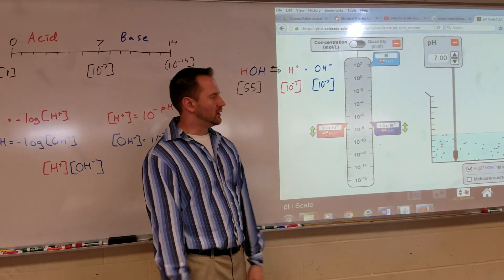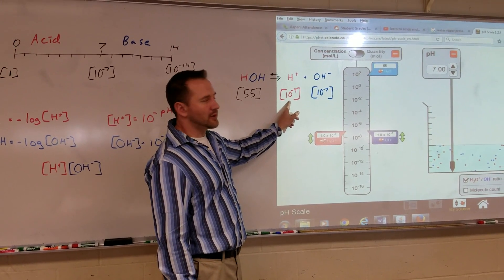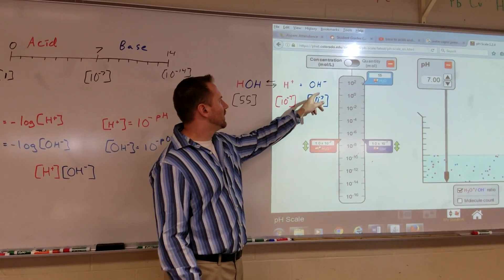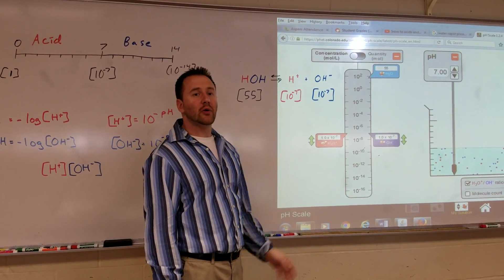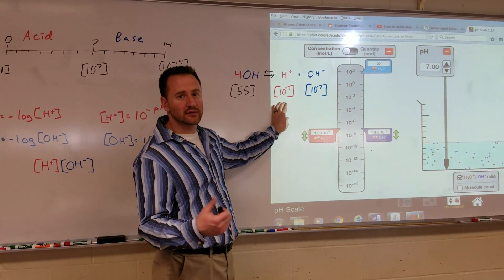However, every once in a while, a certain proportion of it will break apart and form the hydrogen ion, or hydronium ion, and the hydroxide ion. The concentration of these two ions in solution is 10 to the negative 7.